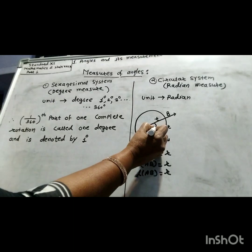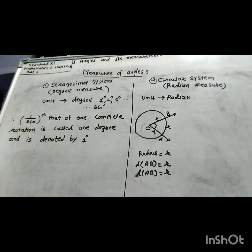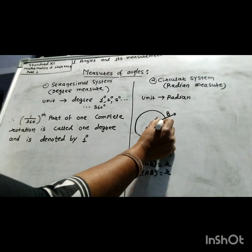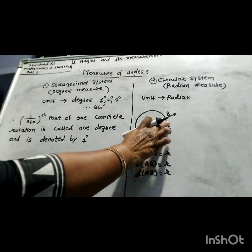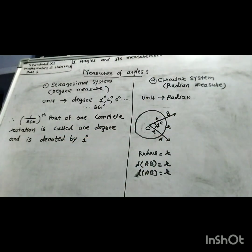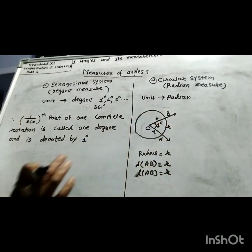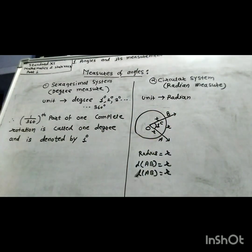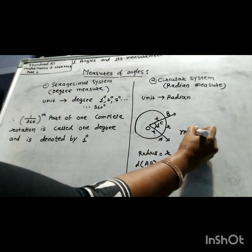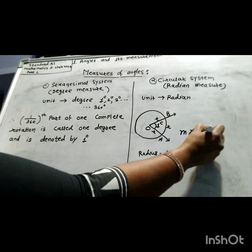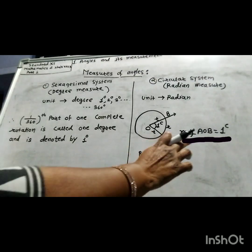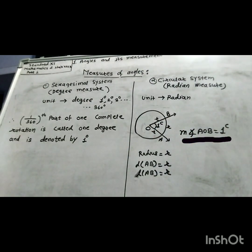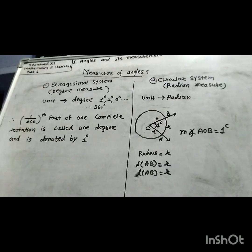Angle AOB is a central angle and is defined as one radian. This angle equals one radian because OA and OB are both radii, and the arc length AB is also equal to R. So the measure of angle AOB is equal to one radian. One radian is the measure of an angle subtended at the center O of a circle by an arc whose length is equal to the radius of the circle.